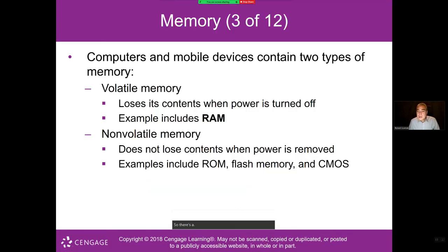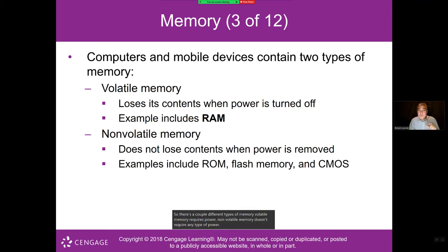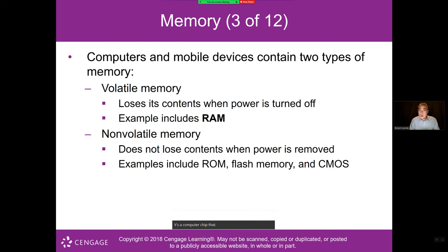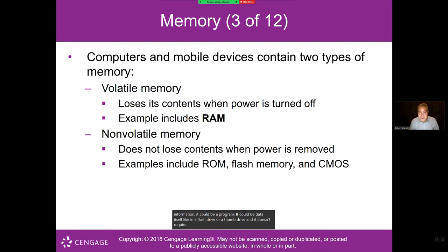There are two types of memory: volatile memory, which requires power, and non-volatile memory, which doesn't. Non-volatile memory includes ROM (read-only memory), flash memory like a USB drive, and the CMOS chip on the motherboard. These chips store information — programs or data — and don't require power to remember what's stored in them.